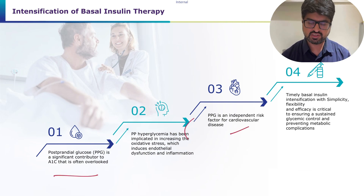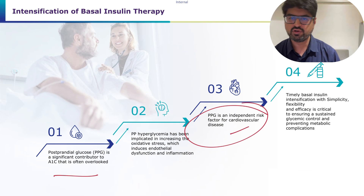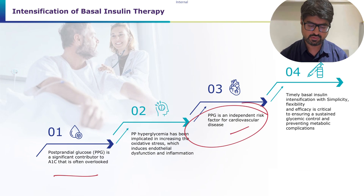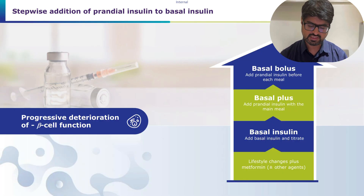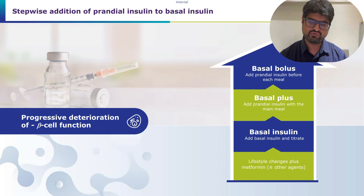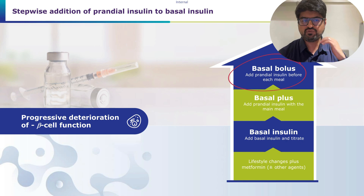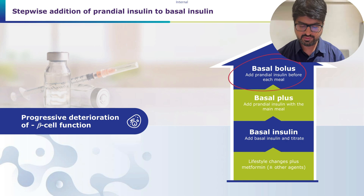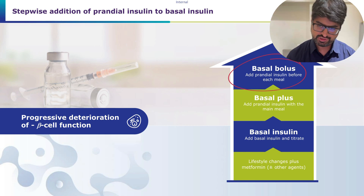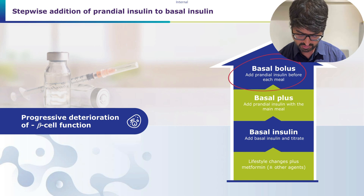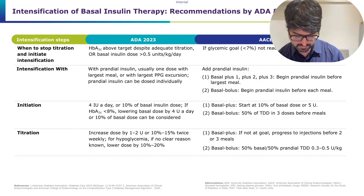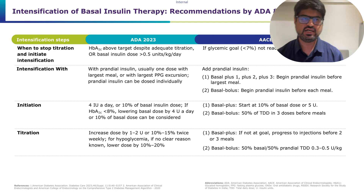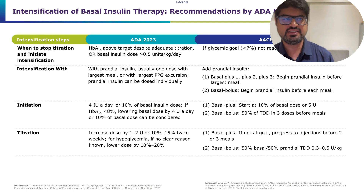Post-prandial glucose (PPG) is also an independent cardiovascular disease marker, so achieving good glycemic control is important. The stepwise approach progresses from basal to basal plus and then to basal bolus insulin in patients with type 2 diabetes and progressive beta-cell deterioration.